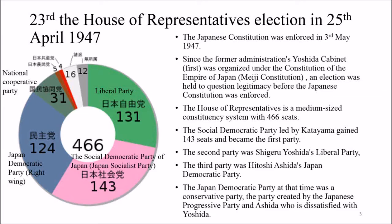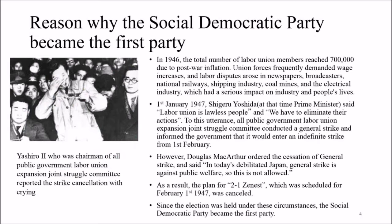The second party was Shigeru Yoshida's Liberal Party. The third party was Hitoshi Ashida's Japan Democratic Party. At that time, the Japan Democratic Party was a conservative party, created by the Japanese Progressive Party and Ashida, who was dissatisfied with Yoshida.